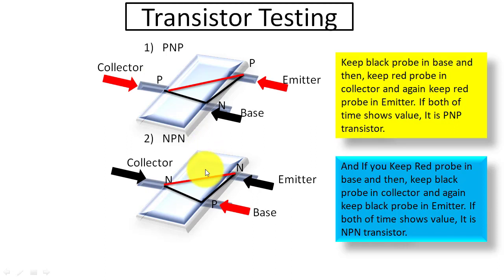But if after keeping red probe in base and black probe in collector and emitter, both of them, one after another, if it shows value, then it is NPN transistor. So we can say base actually ensures is it PNP or NPN transistor.